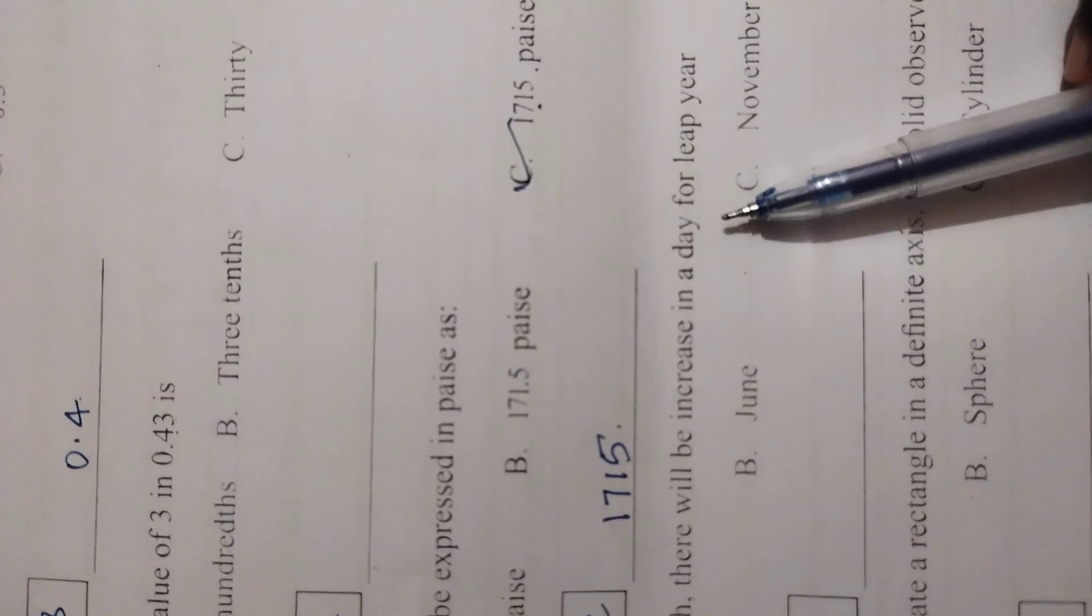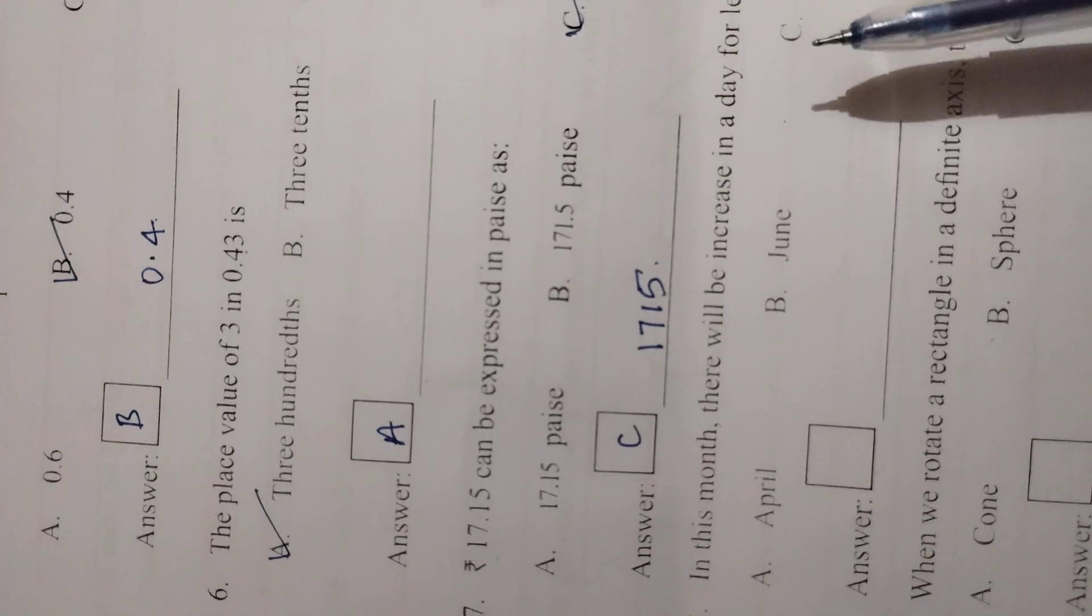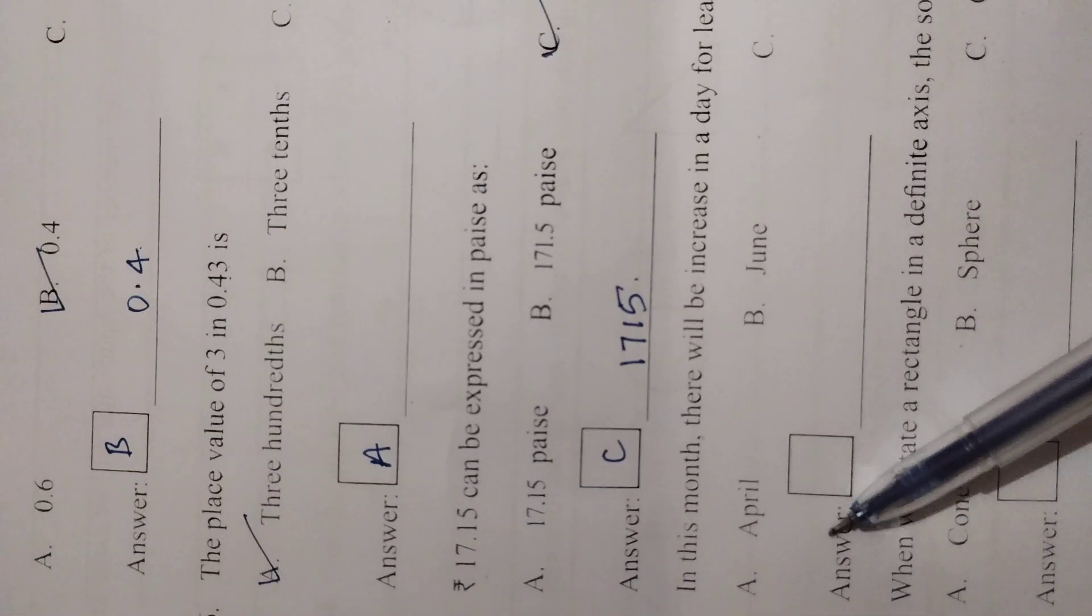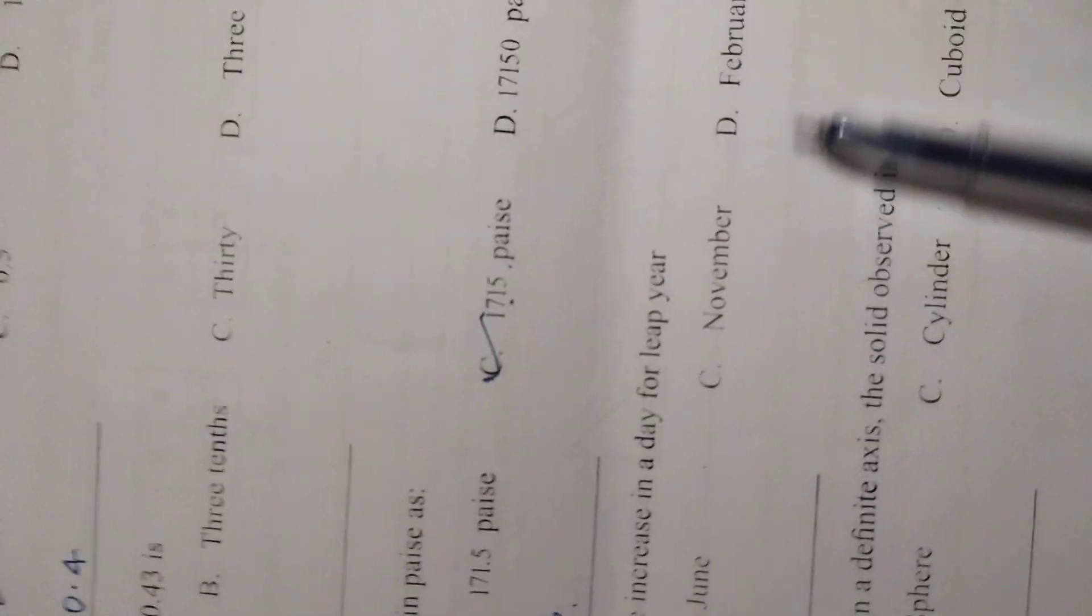In this month there will be an increase in a day for leap year. Which month have they increased a day? April, no. June, no. November, no. February. In February we have 29 days, that is the leap year. So you can write D here.